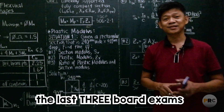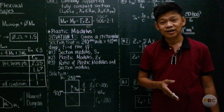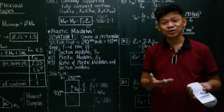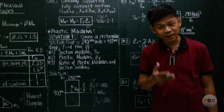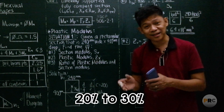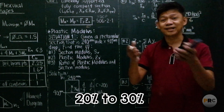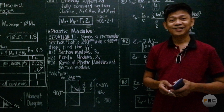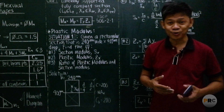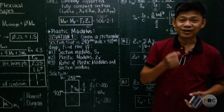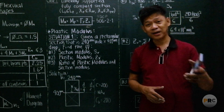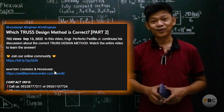We also have solutions to the November 2019 board exam and the last three board exams. Being exposed to solutions of those board exams is an advantage, because the probability that those problems will appear in the forthcoming board exam is about 20 to 30%. The tuition fee per course is 2,000 pesos. We hope to see you and help you in your pursuit of your license. Click the link below to enroll.